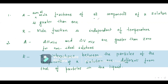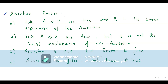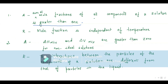Assertion: sum of mole fraction of all components in a solution is greater than 1. When reading, you understand this is a wrong statement because the sum of mole fractions equals 1. So the assertion is false. Reason: mole fraction is independent of temperature — that is true. Since assertion is false but reason is true, the answer is option D.